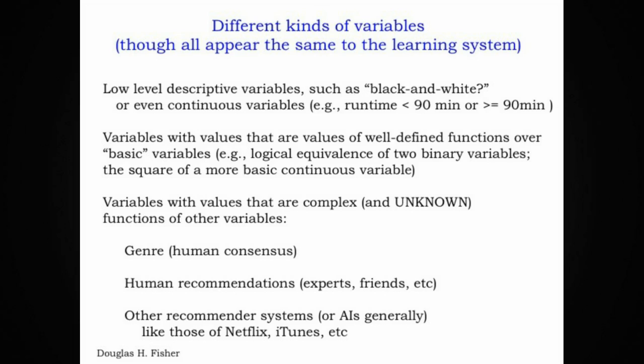And finally, the kinds of features I find most interesting are variables with values that are defined by complex and unknown functions of other variables. When a movie's genre is identified, for example, by movie categorizers, that genre is a very high order feature which somebody is determining by looking at the basic features of a movie and translating into a very high level characterization like western or comedy or some other kind of drama. That's a non-trivial process. We don't know what's going on inside that identifier's brain and so it represents an unknown function as well.